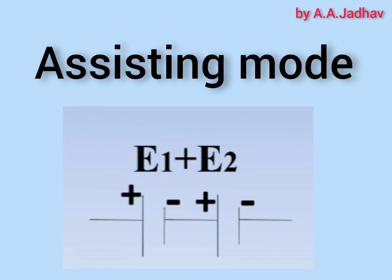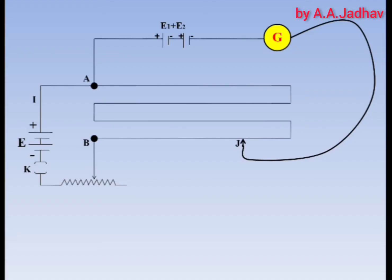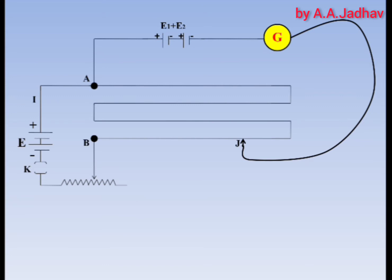First we will discuss assisting mode, which is used in the sum method. In assisting mode, the cells are connected to each other so that the total EMF of the combination becomes E1 plus E2, as shown in the figure. This is the circuit diagram for comparison of EMF of two cells by sum method, with the combination connected in assisting mode. By closing key K, the current I starts flowing through the circuit, driven by cell E.